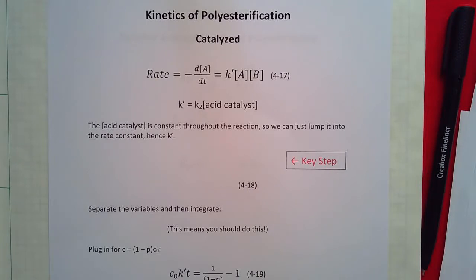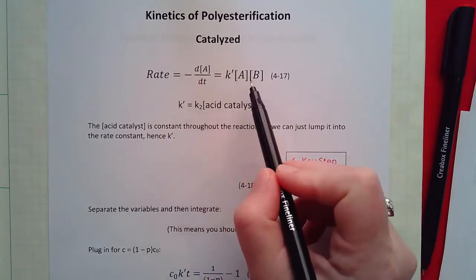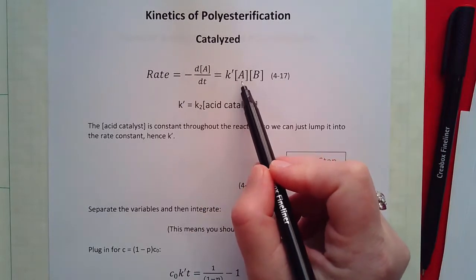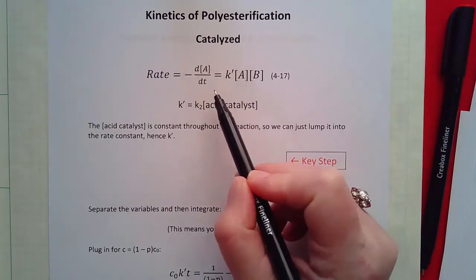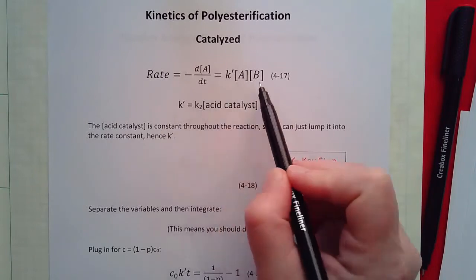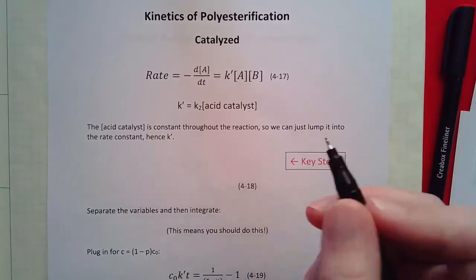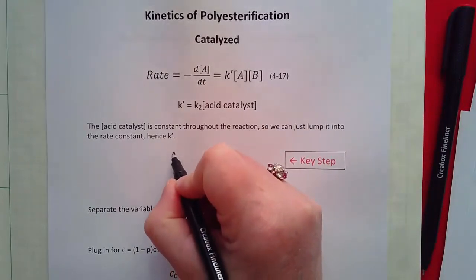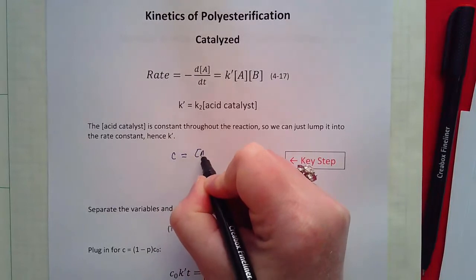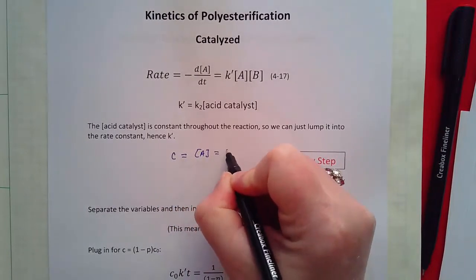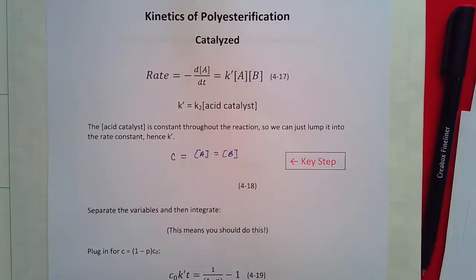Now we have the same key step as we did for the uncatalyzed reaction. Hopefully you remember what that is. So I cannot solve this equation because both the acid concentration and the alcohol concentration change with time. I can't separate the variables and integrate unless I remember to do the key step which is I have to set the concentration of the acid groups equal to the concentration of the alcohol groups.